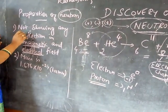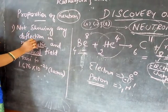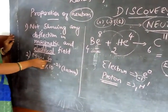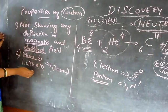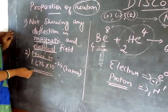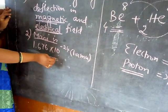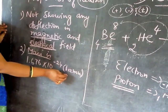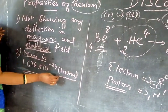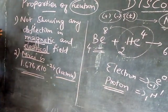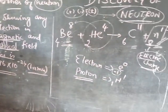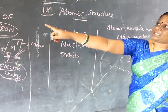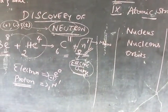Since neutron doesn't possess any charge, it doesn't deflect — it doesn't show any deflection. The mass of the neutron is 1.676 into 10 to the power minus 24, which is approximately 1 atomic mass unit. The discovery of neutron — he has listed out its properties.